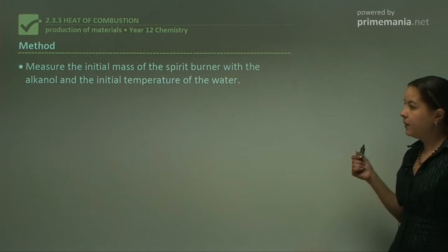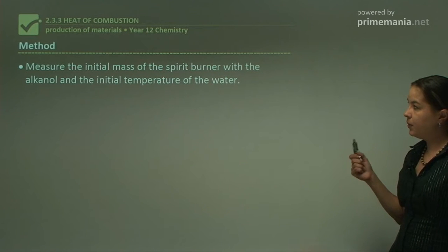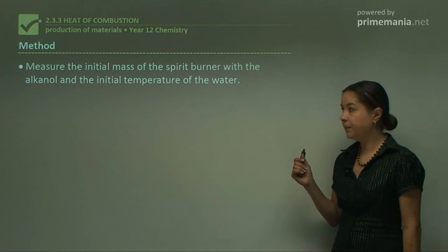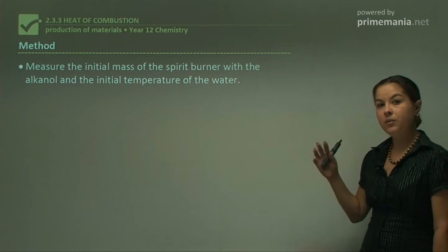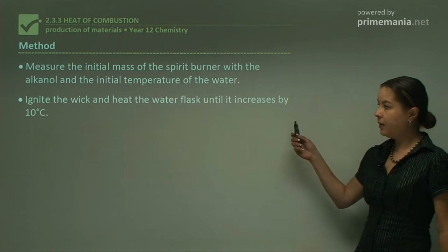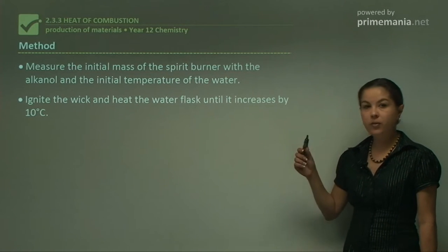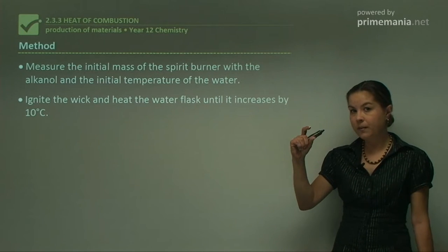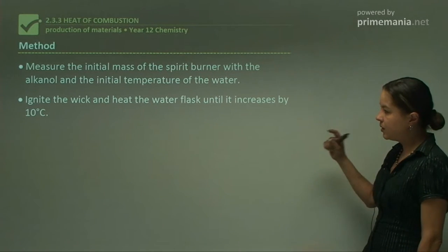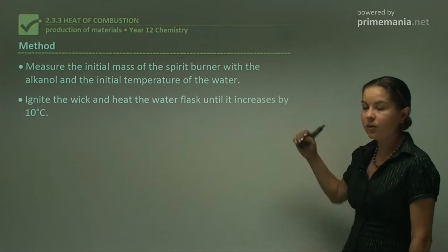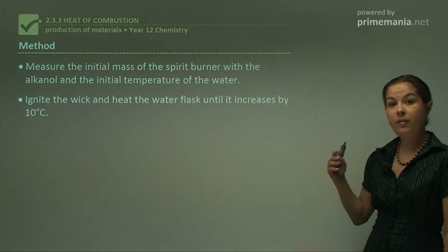So the method: we measure the initial mass of the spirit burner with the alkanol inside, and we also measure the initial temperature of the water. And make sure you keep good records of all these things. We ignite the wick and we heat the water flask until it increases by 10 degrees Celsius. So you have to watch that increase in temperature and make sure you don't run away and do something else, because it has to be exactly or as close that you could see to 10 degrees as possible, so that you have consistency.